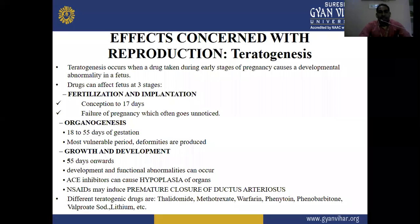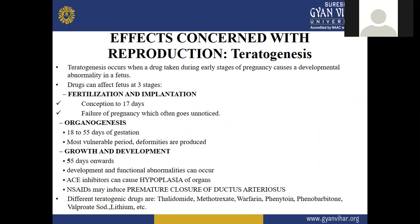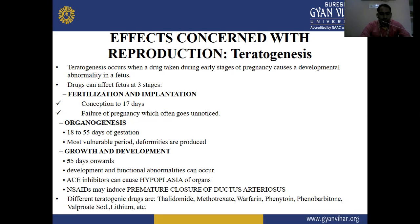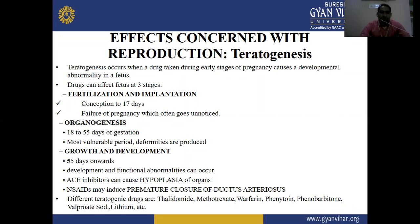Next, effects concerned with reproduction — teratogenesis. Teratogenesis is the process by which congenital malformations are produced in an embryo or fetus. Teratogenesis occurs when a drug is taken during the early stage of pregnancy and causes a developmental abnormality in the fetus.